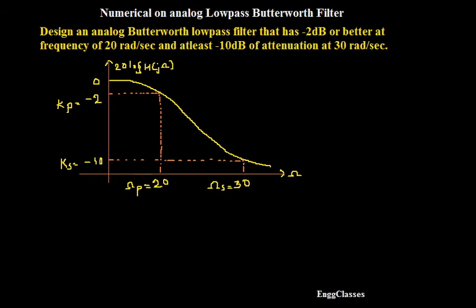Hello everyone. Welcome to NG Classes YouTube channel for a video lecture series on Digital Signal Processing. In this video, we will consider the concept of a numerical on analog low-pass Butterworth filter. It has been given to design an analog low-pass Butterworth filter that has minus 2 dB or better at a frequency of 20 radians per second and at least minus 10 dB of attenuation at 30 radians per second.